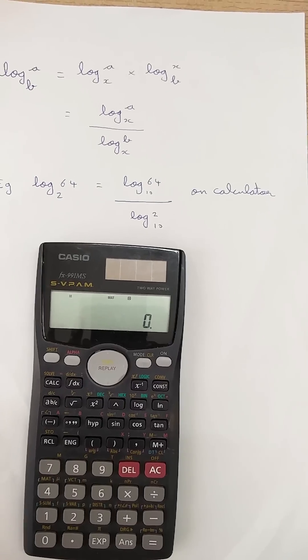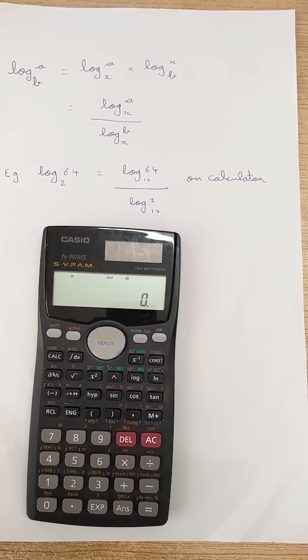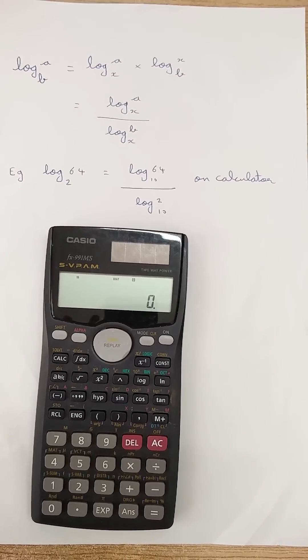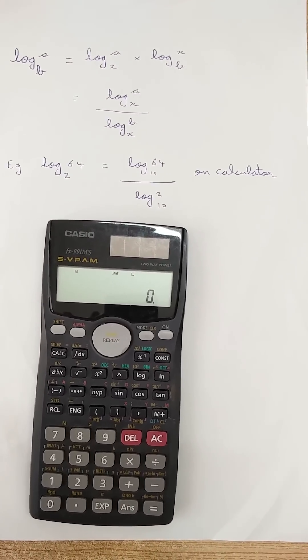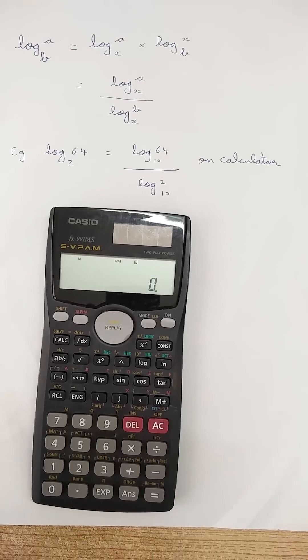We take advantage of this formula and write it as log a to the base x divided by log b to the base x. In the calculator, it's only log to the base 10 or the natural logarithm.